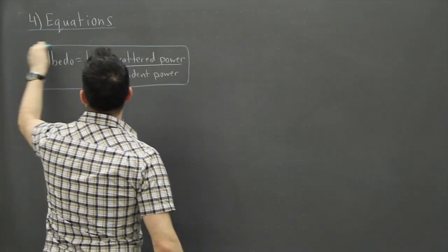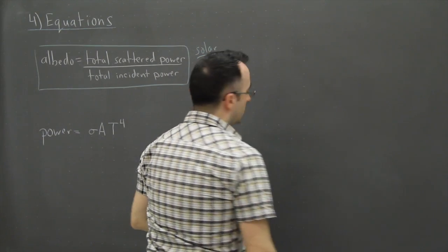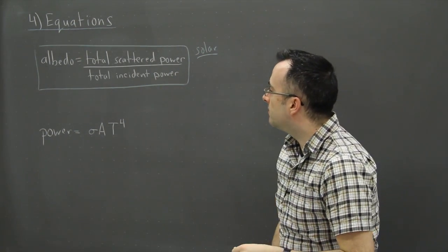Well, this is something due to solar, so this is solar related. Now what albedo means, here it's written as total scattered power divided by total incident power.